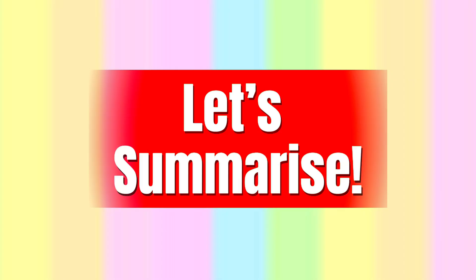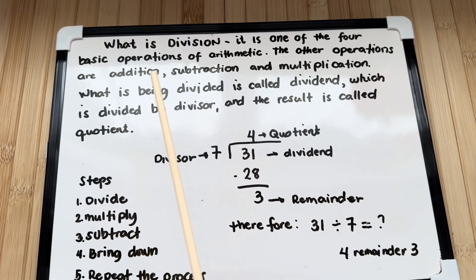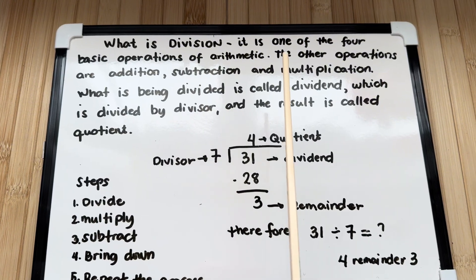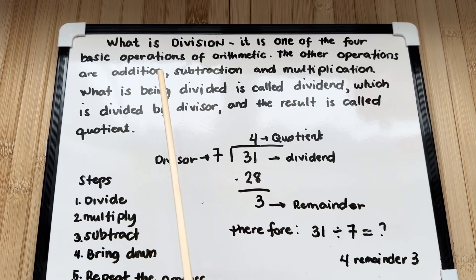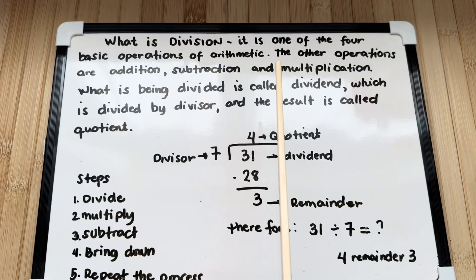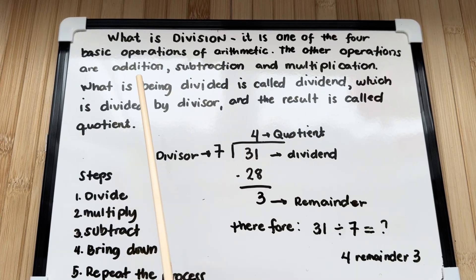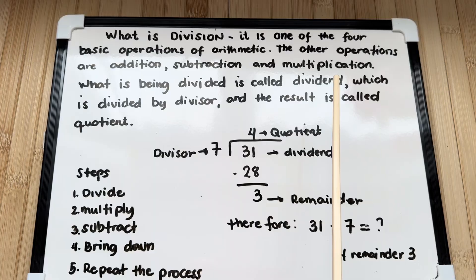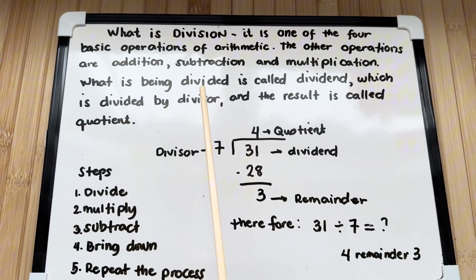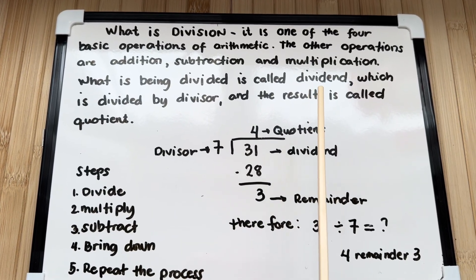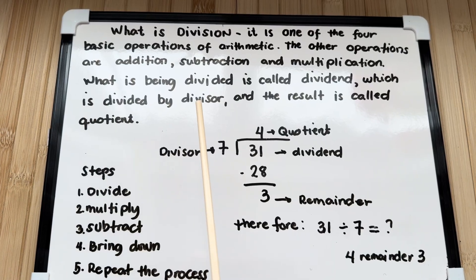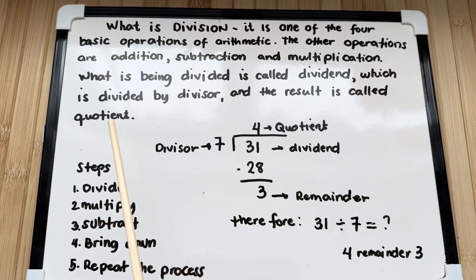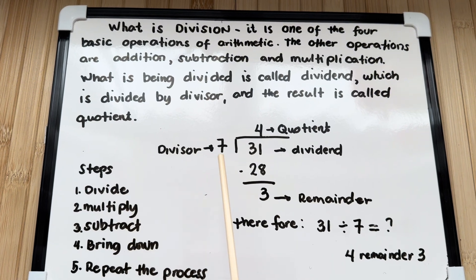Let's summarize. What is division? It is one of four basic operations of arithmetic. The other operations are addition, subtraction, and multiplication. What is being divided is called the dividend, which is divided by the divisor, and the result is called the quotient.